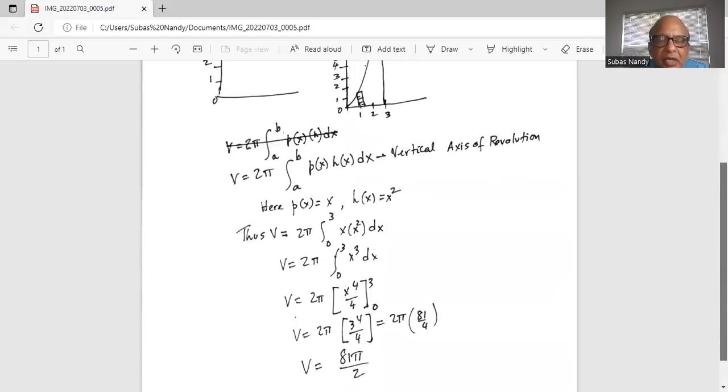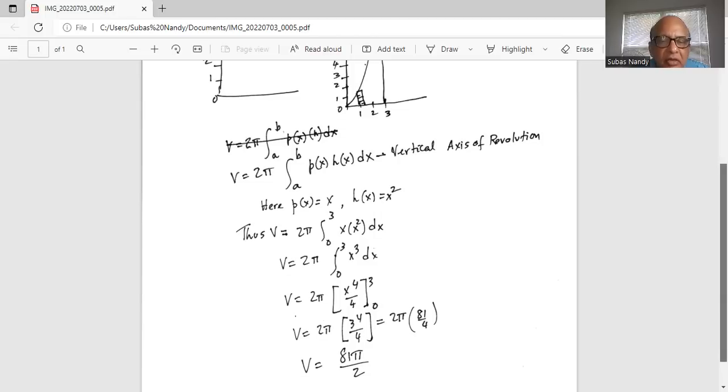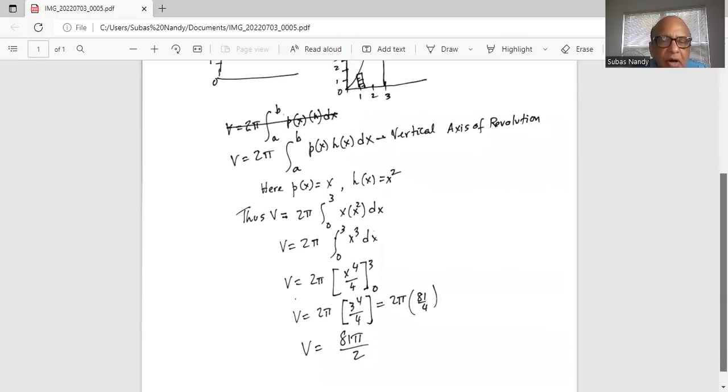Volume is 2π times x^4 over 4 from 0 to 3. So 2π, we substitute the higher limit 3: 3 to the power of 4 divided by 4, minus 0 to the power of 4 divided by 4, which is 0.